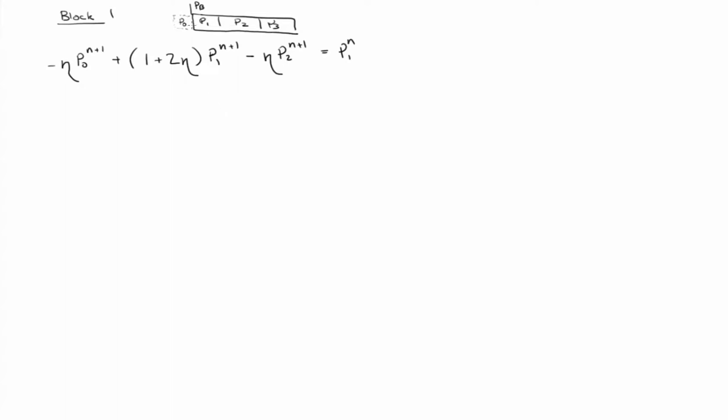We need to replace P0 in this equation with something, and we can use the boundary condition to do that. If we say that Pb, since it's right at the center of blocks P0 and P1, we can take an average. Pb is equal to the average of P0 and P1. So what we want to do then is solve this equation for P0, and then we have 2Pb minus P1.